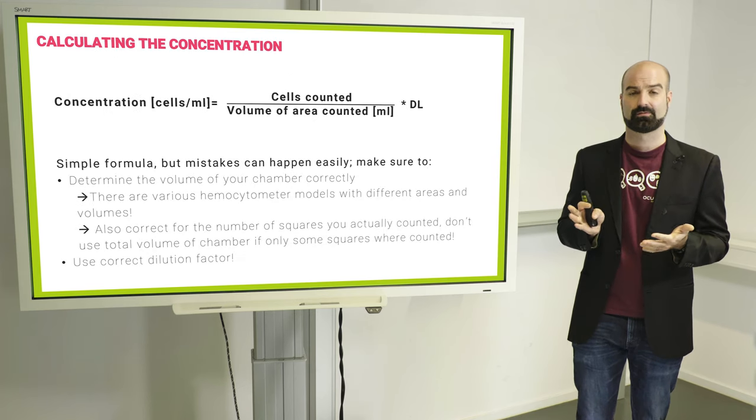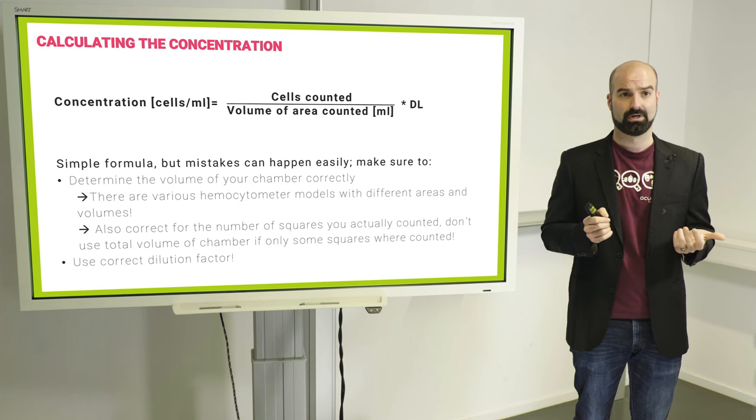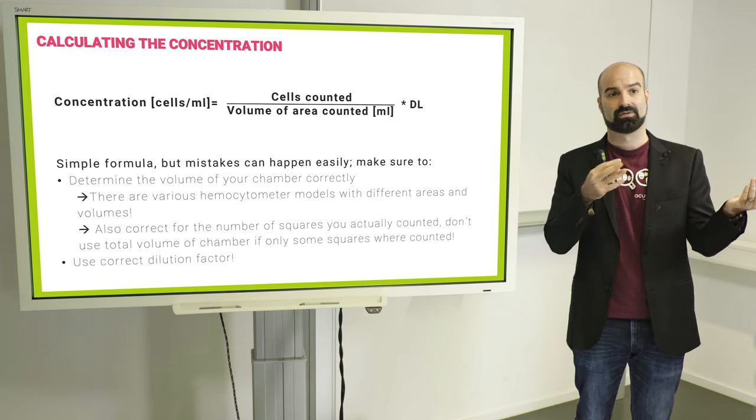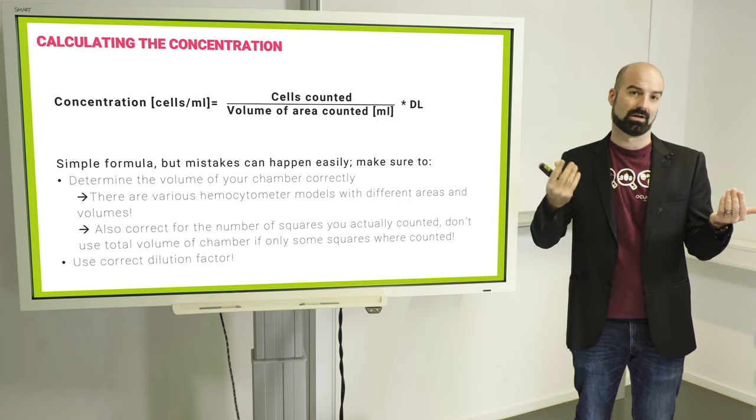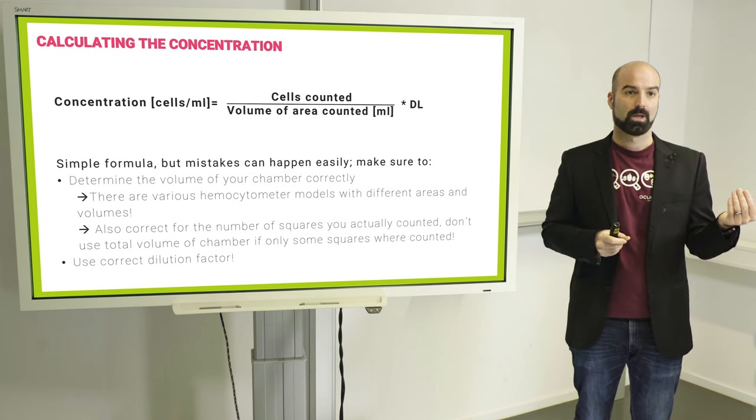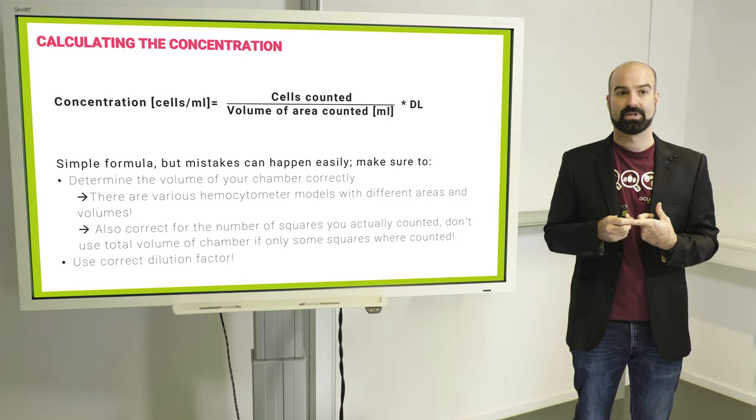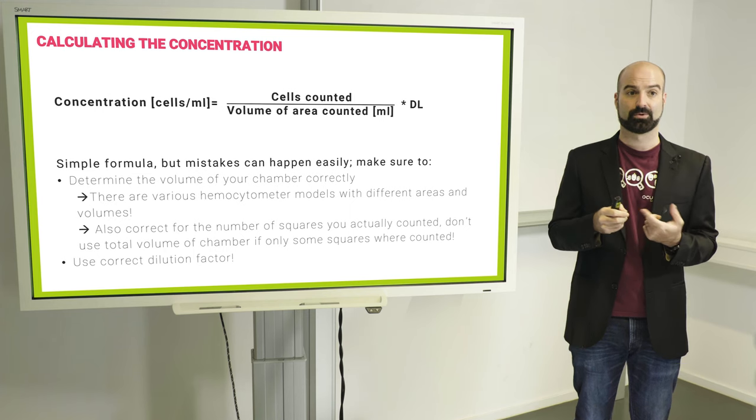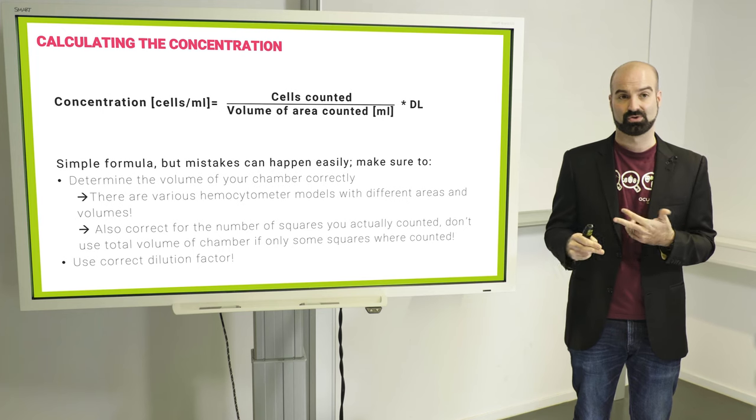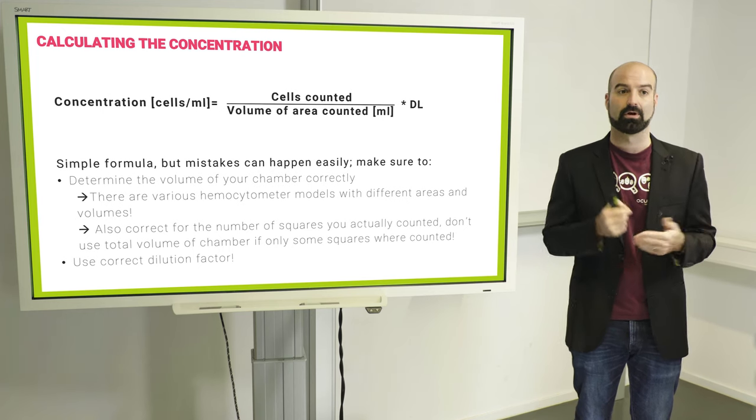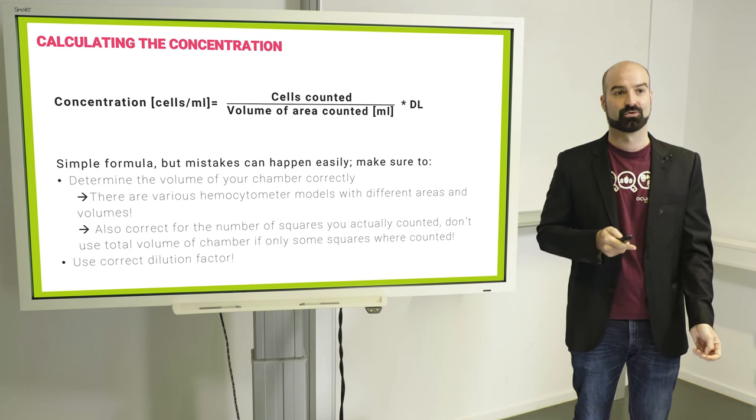And then calculation mistakes. If you take the very basic formula for how to calculate your concentration in a hemocytometer, it's fairly simple. You have the cells you counted divided by the volume that you counted them in and then you add a dilution factor if you diluted. So not complex here, but errors can happen, especially since there are hemocytometers with different areas and you also have to correct for how many squares you counted because almost no one will count the entire area of a hemocytometer. And as I mentioned before, actually use the correct dilution factor.